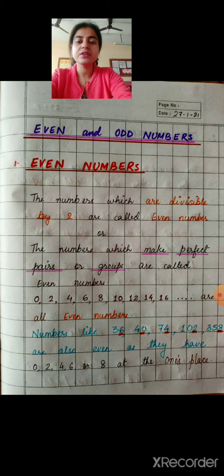Children, even numbers. The numbers which are divisible by two are called even numbers. Or, there is another definition, the numbers which make perfect pairs or groups are called even numbers. यानि कि जो numbers तू से डिवाइड हो जाते हैं बिना कोई remainder छोड़े, उन्हें हम even number कहते हैं. या फिर वो numbers जो perfect pairs यानि जोड़े बनाते हैं या groups बनाते हैं, उन्हें हम even numbers कहते हैं.